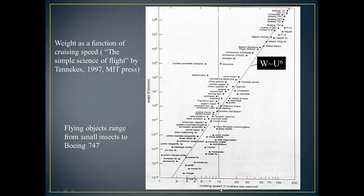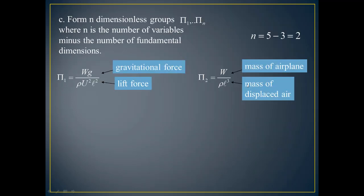Now we can say that cruising speed is proportional to weight to the power 6. But how did we come to this conclusion? How did we find that weight is proportional to U to the power 6? That is from Buckingham Pi theorem. So what Buckingham Pi theorem states: if you have got so many number of variables, we try to reduce those number of variables to a limited number of dimensionless groups. For example, 10 variables can be reduced to fewer non-dimensional numbers.